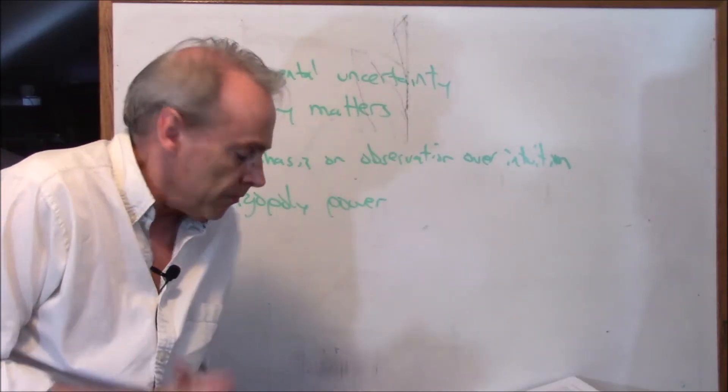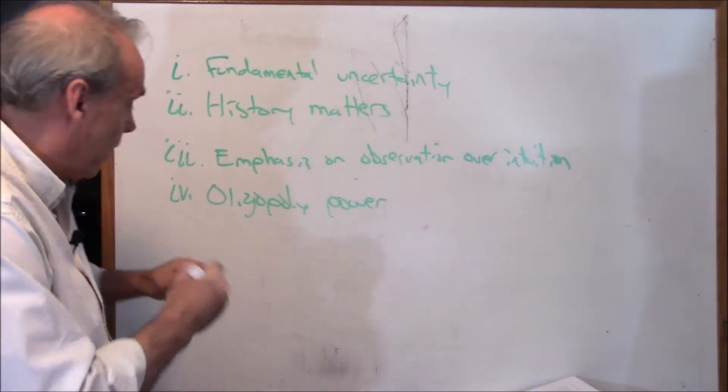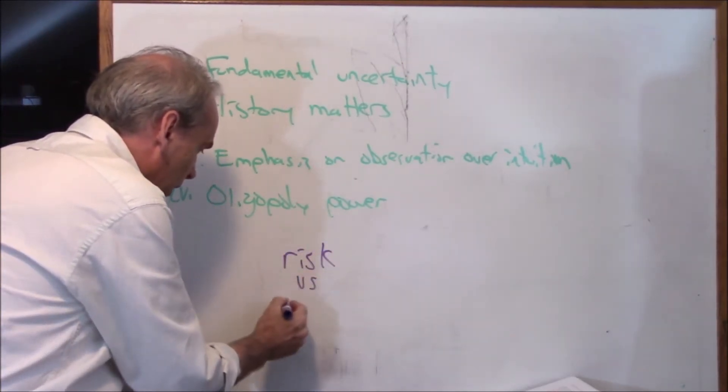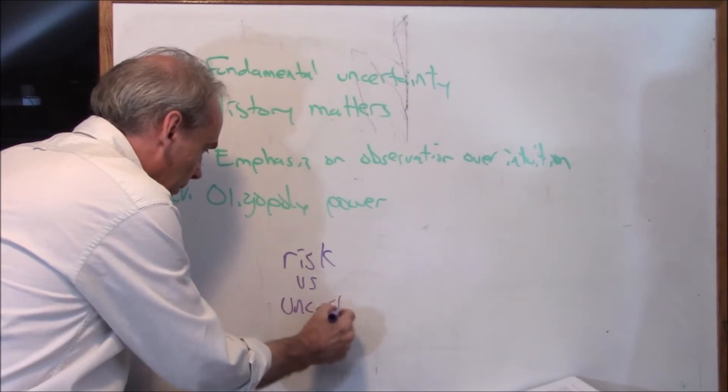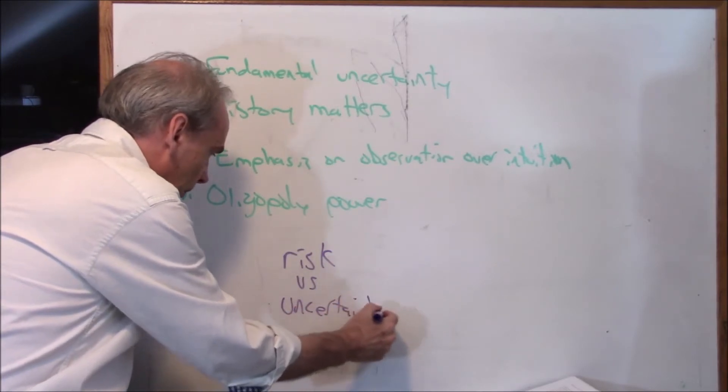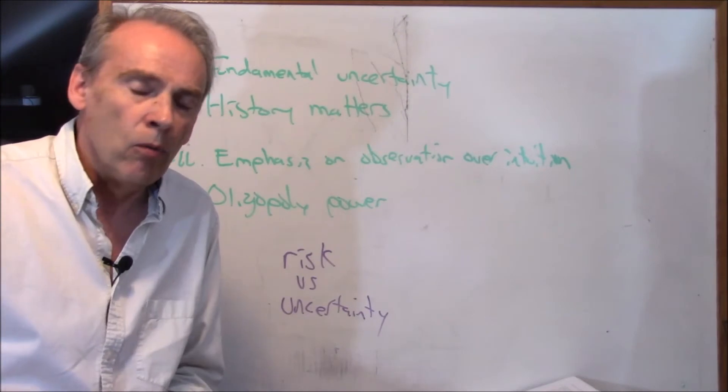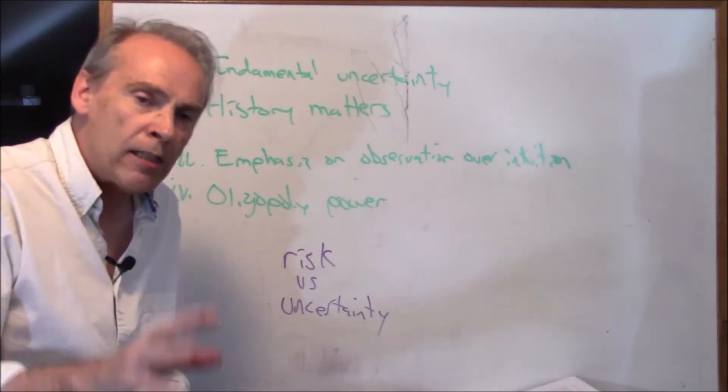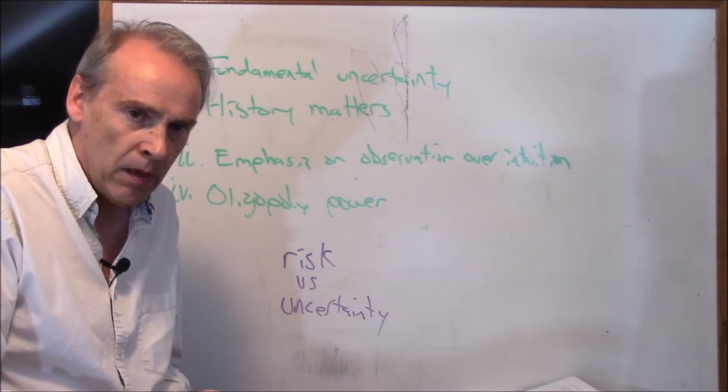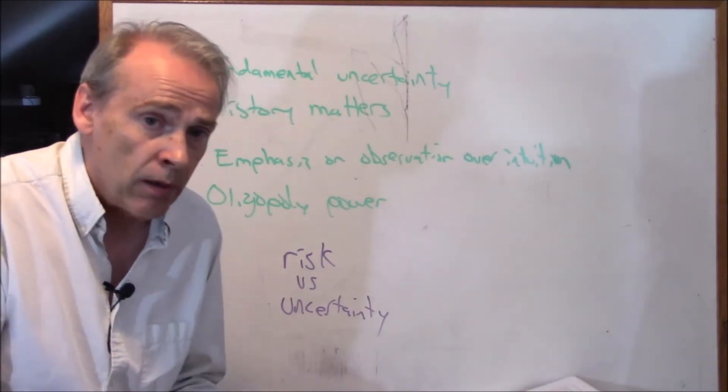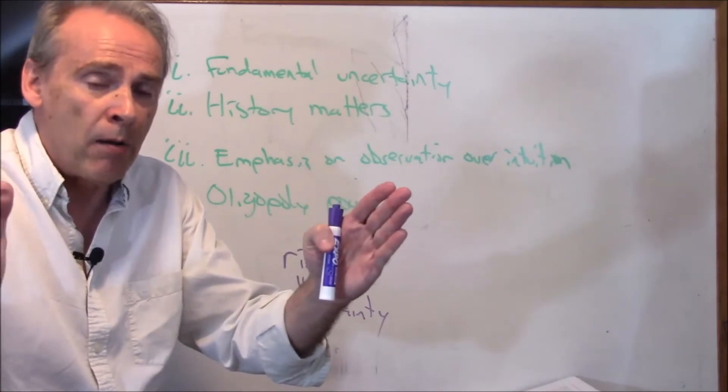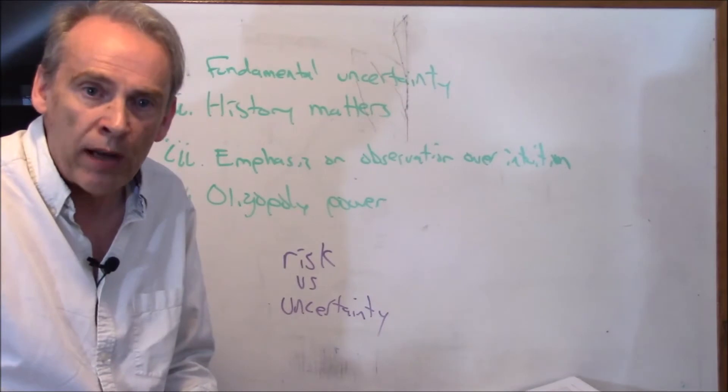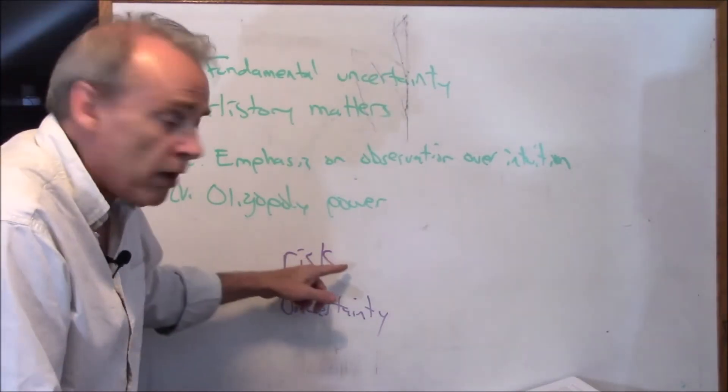Keynes was arguing - Keynes was a mathematician by training actually - and he made a big deal of the difference between risk and uncertainty. Risk is when you play roulette. You know every possible outcome and the odds of every outcome. So mathematically you know the future in terms of probabilities. You don't know which exact one's going to happen, but you know what can happen and what the odds are. So roulette is risky.